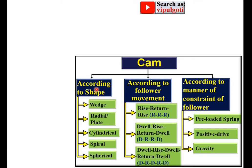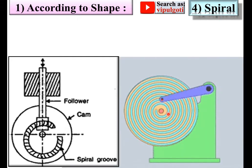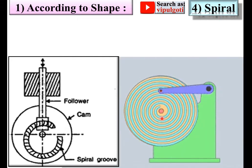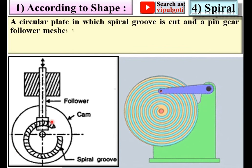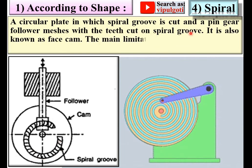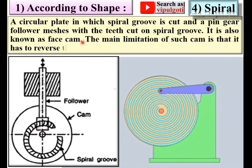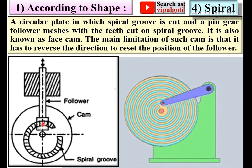Next is the spiral cam, according to shape. Here you can see a spiral-shaped groove is provided, which is why it is called a spiral cam. A pin gear follower meshes with teeth cut on the spiral groove. It is also known as a face cam. The main limitation of this cam is that it has to reverse direction to reset the position of the follower.